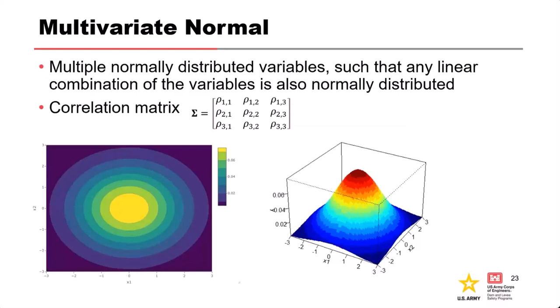Other distributions involve multiple variables. A common one is the multivariate normal, which applies when you have two or more normally distributed variables such that any linear combination of those variables is also normally distributed. In the two-variable case, the combination of two normally distributed variables is also normally distributed. This comes into play in more advanced risk analysis topics.